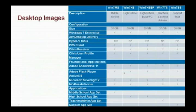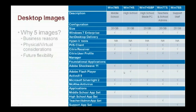Looking at the different types of desktop images, you can see it broken down into five different images. For the most part they are identical — there's very little that's different between each one. So you might think: why can't you get by with one? Honestly, we could have. There is no reason we were able to identify during design that we could not have gotten by with a single desktop image.